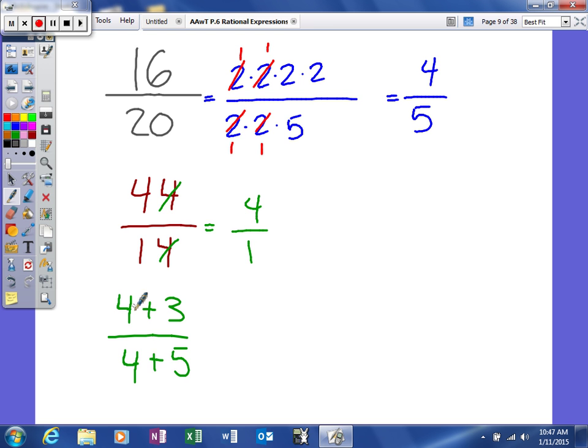However this one is a lot more common. What we have here is 4 plus 3 over 4 plus 5. And people want to come in here and tell me well those will cancel, and then this fraction is equivalent to 3/5. Well that unfortunately is not correct, because as we well know this is actually going to be 7/9.